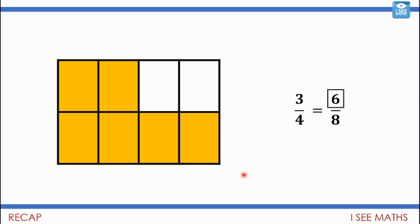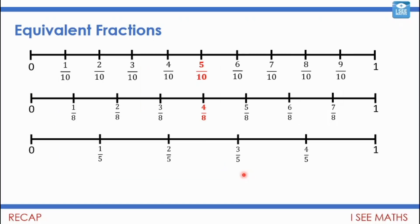We had a look at number lines from zero to one in tenths, and we saw that a half is five-tenths because five is halfway. When our number line is cut into eight pieces, four is half — the same distance along. Then we had a look at one in fifths and we couldn't find any halves there. So: can you find any other fractions that are a half, and why wasn't there a half on that bottom number line?